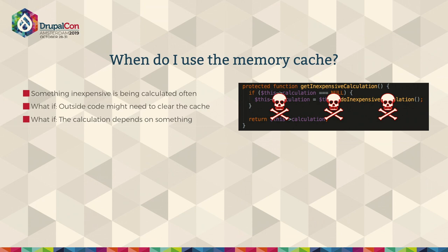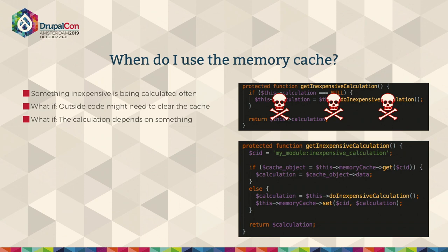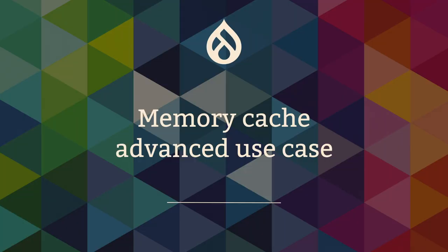So let's stop using this pattern. This is how you use the same pattern with the memory cache. You define your cache ID, and if it's in the cache, you return that. If it's not, you set it. Around these parts you would set your cache tags if it depended on something that requires cache tags. This is just a simple example so that it would fit on screen. It's an advanced session, so I do expect people know how to use a cache backend in Drupal core.